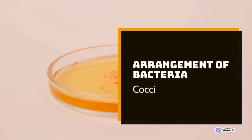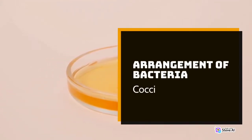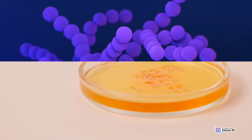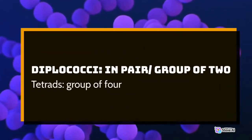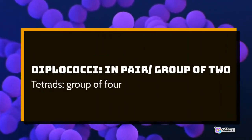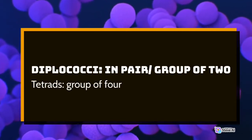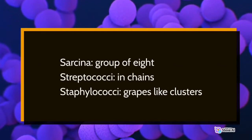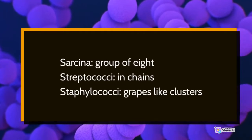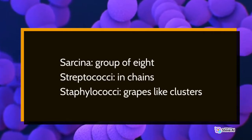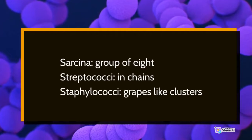Arrangement of bacteria — Cocci: Diplococci — in pairs or groups of 2. Tetrads — group of 4. Sarcina — group of 8. Streptococci — in chains. Staphylococci — grape-like clusters.